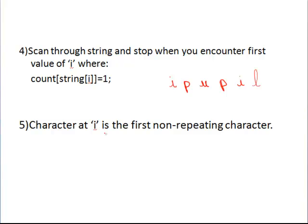Okay, so now that count has the required values, we scan through the string and stop when we encounter the first character with the first value of count as one. That is the first character that has a corresponding value of count as one. In our example, that character will be u.